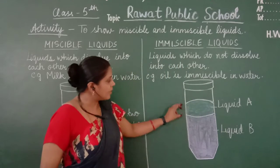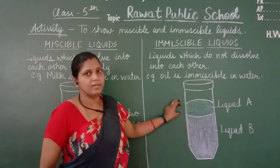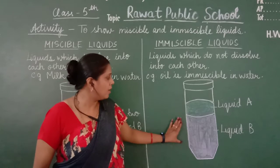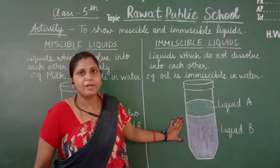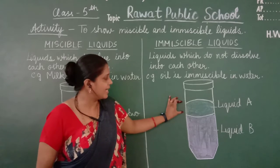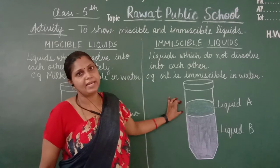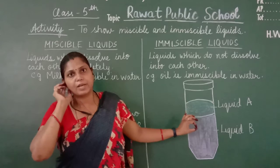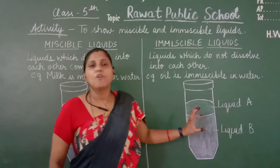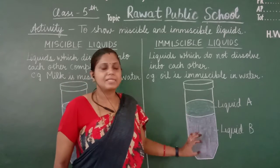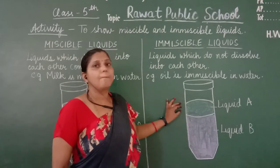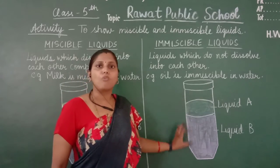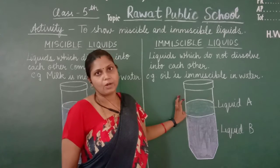With immiscible liquids you will see two distinct layers — one layer of liquid B and one layer of liquid A. So immiscible liquids do not mix; they form a layer over the other liquid.